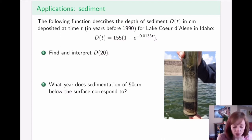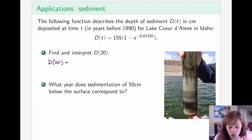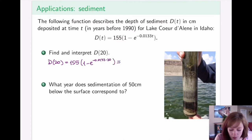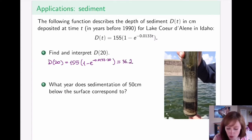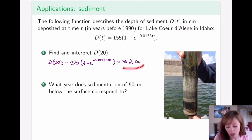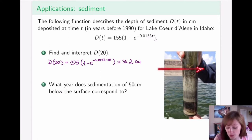The first task is to find and interpret d(20). We simply plug 20 into our function and put it into the calculator, which gives us approximately 36.2. Looking back at our units — measured in centimeters — that means that 20 years before 1990, which is 1970, the sediment we're looking at is 36.2 centimeters below the surface. So 36.2 centimeters corresponds to the level of the year 1970.